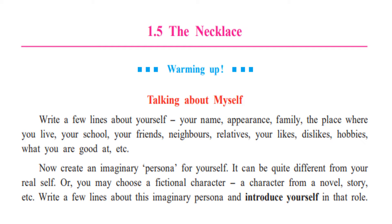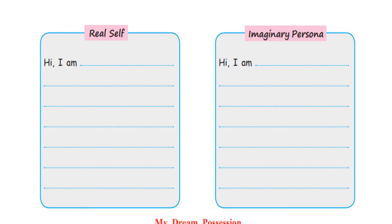Write a few lines about this imaginary person and introduce yourself in that role. In this activity, in the first column you write what you actually are, and in the next box you write what you are imagining yourself as — a different person. Whatever you are today, you imagine being something different, expecting something more from yourself.